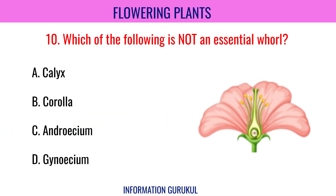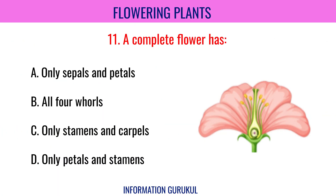Which of the following is not an essential whorl? Calyx. A complete flower has all four whorls.